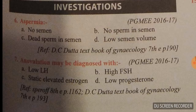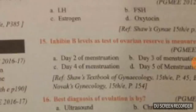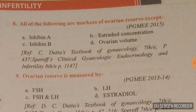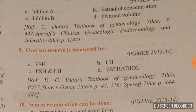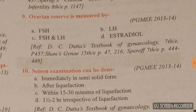Question number seven: anovulation may be diagnosed by — looking at all four options, the answer is low progesterone. Question number eight: all of the following are markers of ovarian reserve except — answer is A. Inhibin A is not an ovarian reserve marker, but inhibin B is.